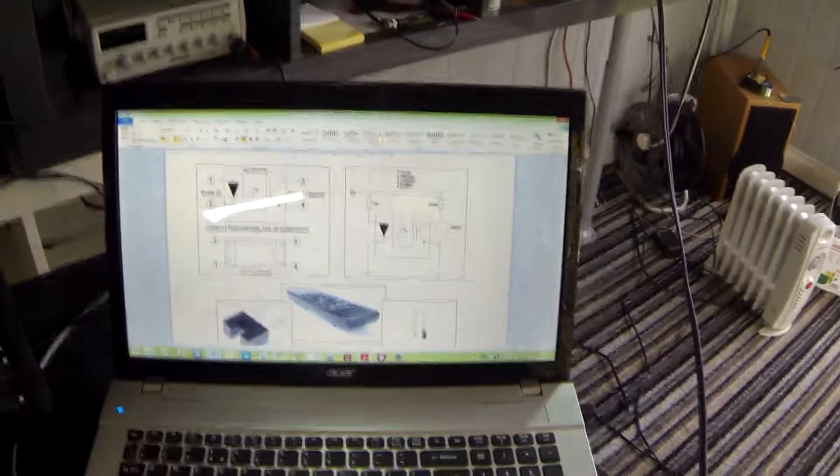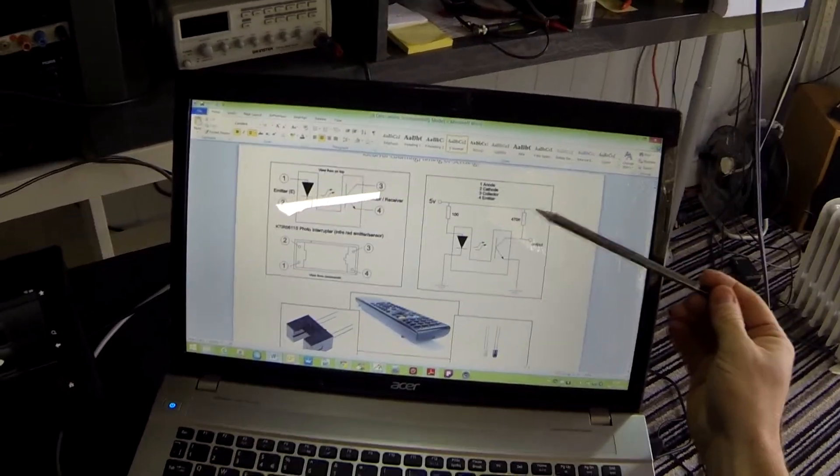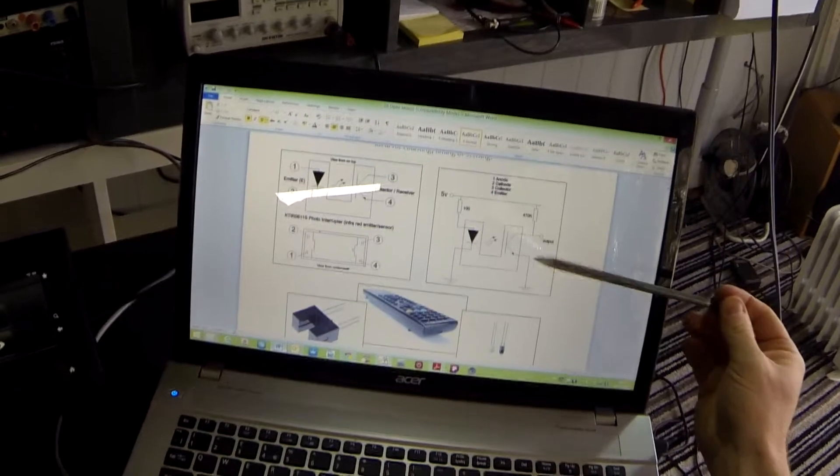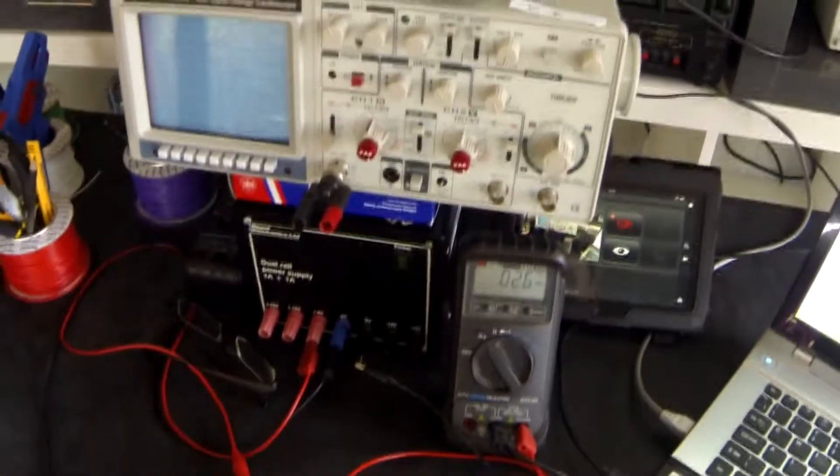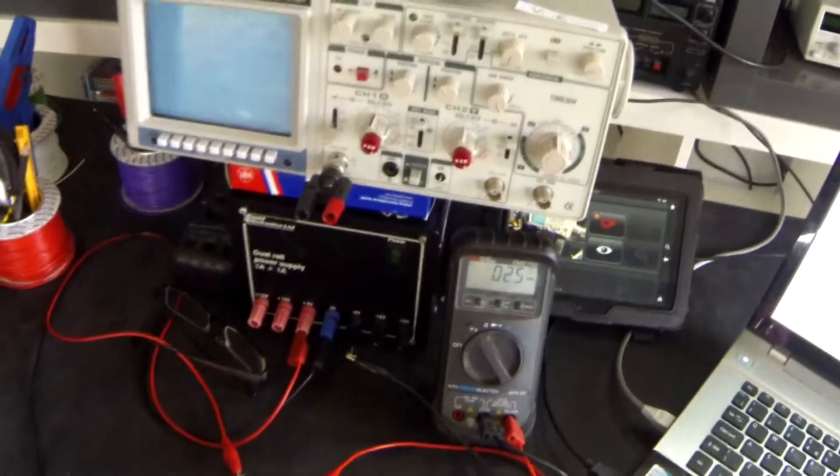So if we just go back very quickly, here is my output voltage across this 470K resistor and this phototransistor. At the moment, hopefully you can see that the output voltage is 0.026 of a volt which is basically zero so the output is low.